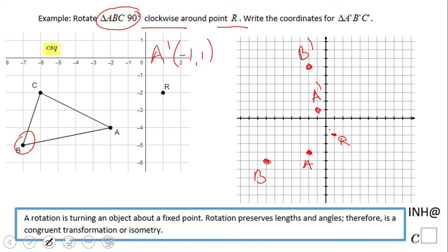So let's write point B prime. B prime is negative 2 and 6.